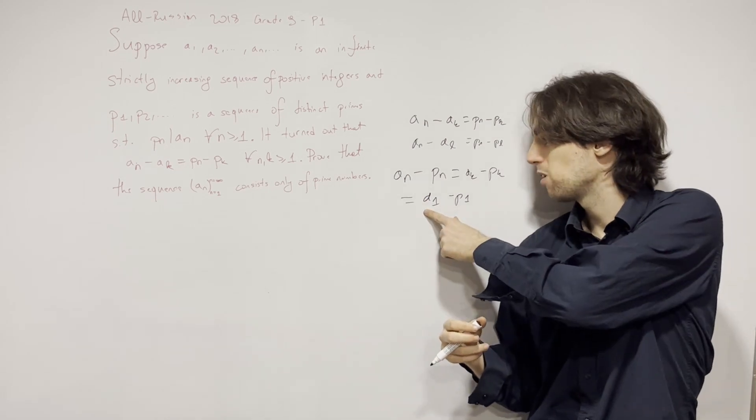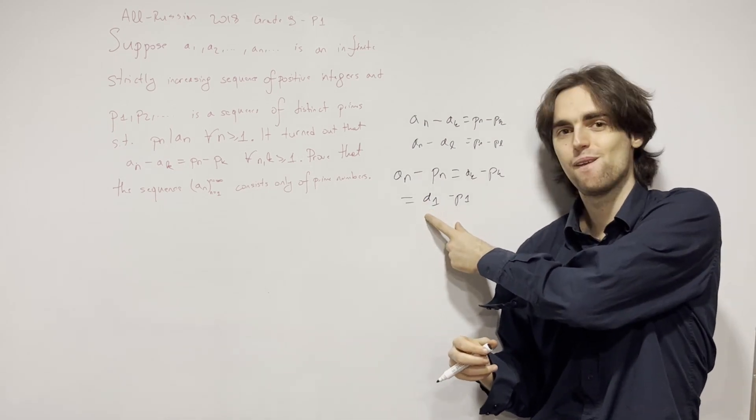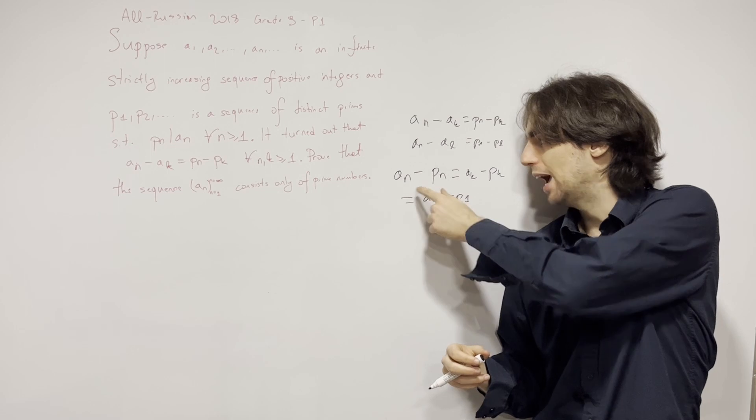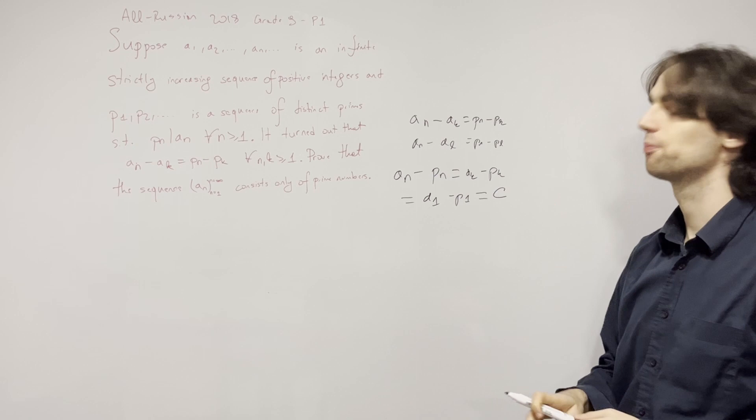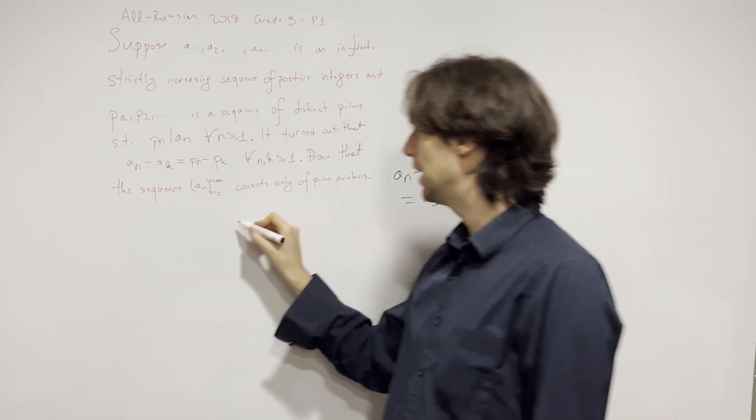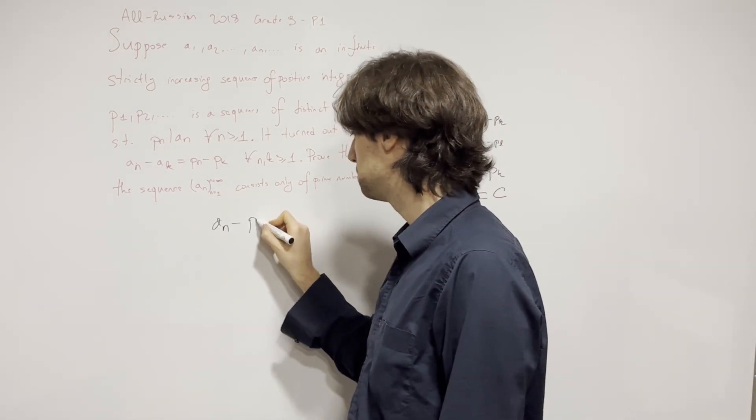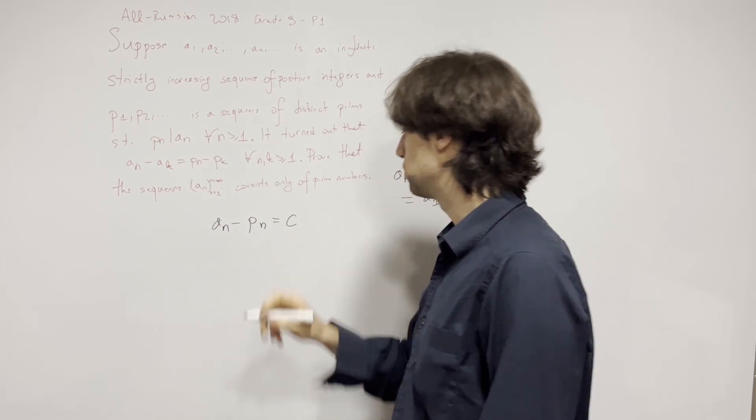What is this? Well, n can vary and p_n can vary, but this thing right here remains a constant. So now I have that a_n minus p_n is equal to a constant.